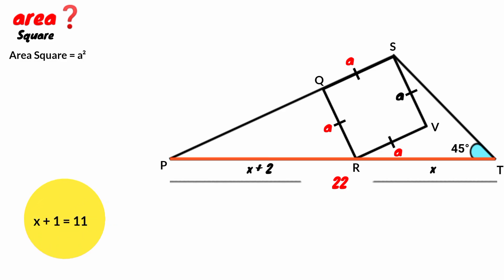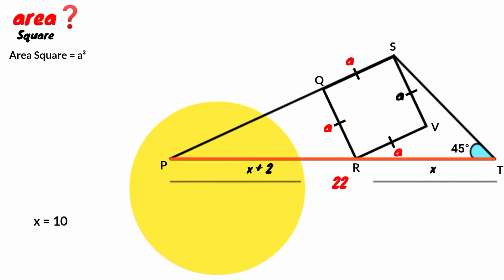This 22 divided by this 2 is 11, so x plus 1 is 11. Take 1 to the right hand side of the equation — 11 minus 1 is 10, so x equals 10. Substitute it here: 10 plus 2 is 12.